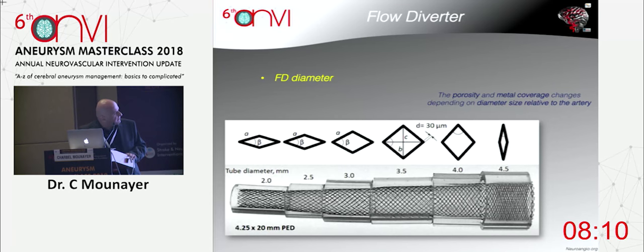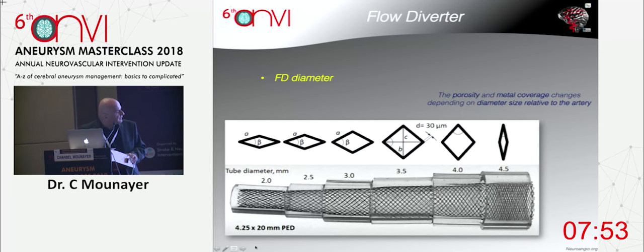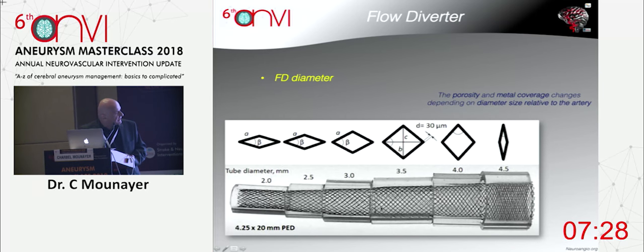If you look at this recently published paper: when you put a 4.25 pipeline in different vessel diameters, you can see how the meshes become tighter. When you are over a vessel that is 4.5mm, you have high flow diversion — but as the vessel decreases in size, you can see how the meshes will open. When the size difference between flow diverter diameter and vessel size is really important, around 2mm, the beta angle will be opened again and you will lose flow diversion.